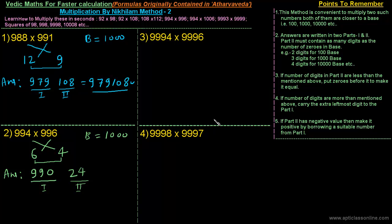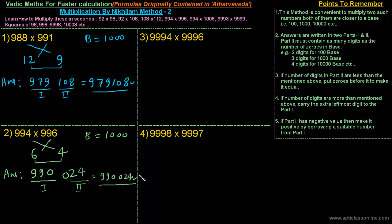Since the base is one thousand, the second part must contain three digits, which it is not. So we have to put zeros before it to make it a three-digit number — we put one zero, making it 024. So the final answer is 990024.